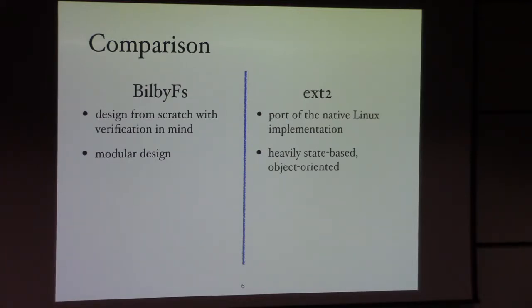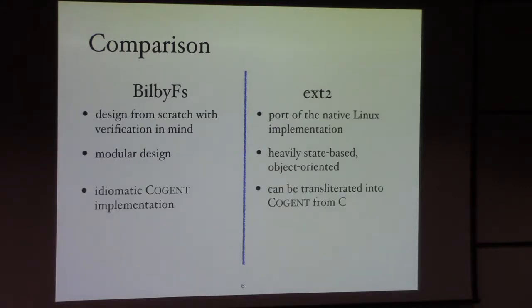BilbyFS favors strongly towards a modular design so that the entire program is decomposed into smaller components. Whereas for native file system reasoning, ext2's C is basically very heavily state-based and object-oriented, the way that traditional file systems are designed. We can write idiomatic Cogent code for BilbyFS, but not so much for ext2, though we can still translate the ext2 implementation into Cogent.